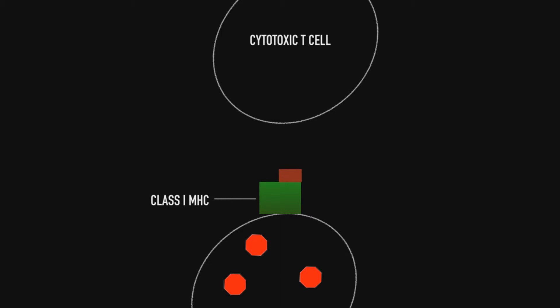For reference, the bottom cell is called the antigen presenting cell and the top cell is called the cytotoxic T-cell. We call it the antigen presenting cell simply because it has the antigen — PMW in this case. We have our T-cell receptors, which are usually made of alpha and beta chains, and they're what bind to the Class 1 MHC molecules and allow the cytotoxic T-cell to recognize the antigen.